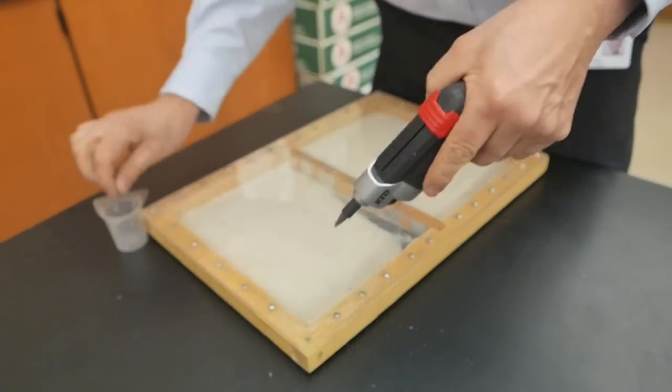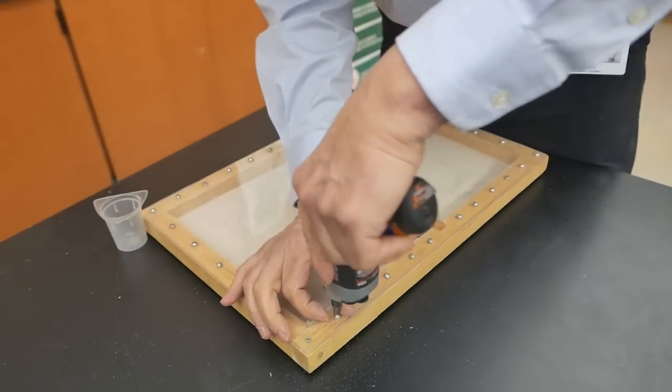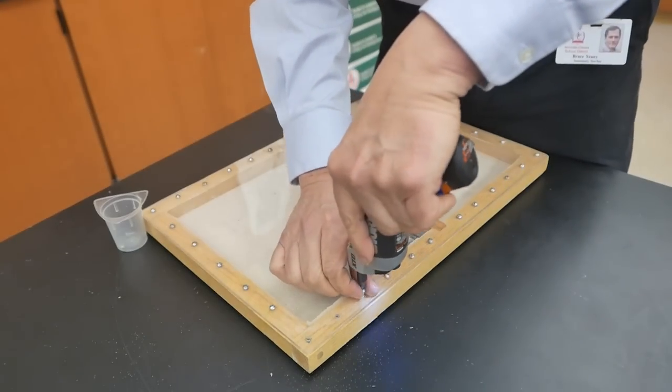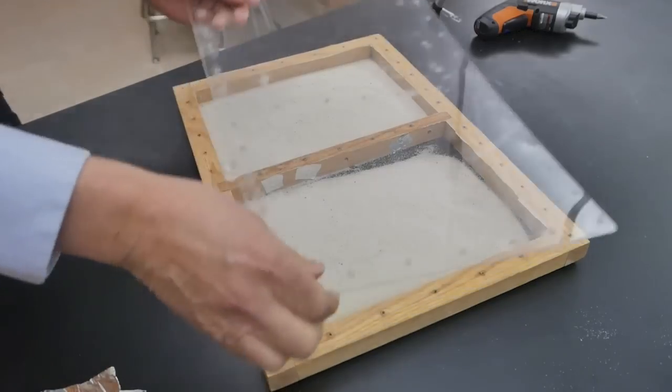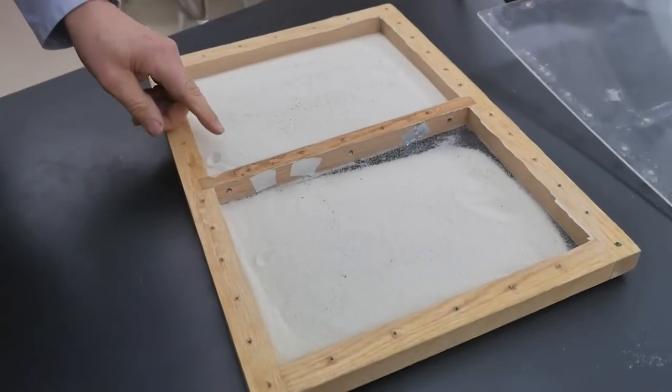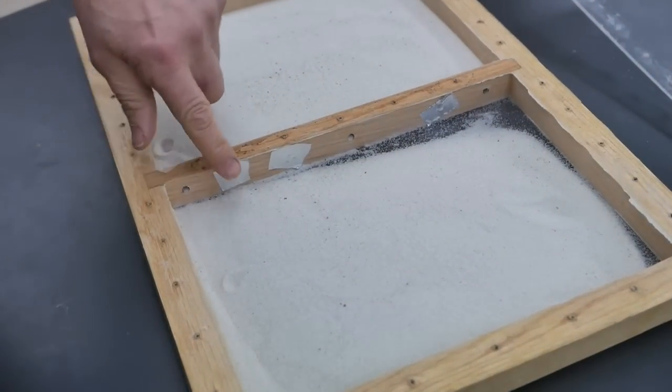Now if I want to change the number of holes, the first thing I have to do is remove all the screws. The screws are out, let's take the plastic off. And here we can see the holes that are either open or covered.